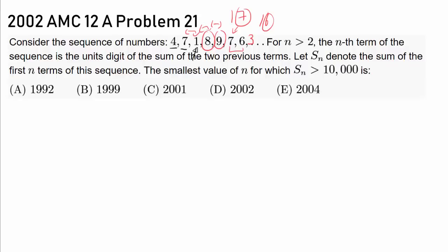So let's read on. Let S sub n denote the sum of the first n terms of the sequence. For example, S sub 3 is 4 plus 7 plus 1, or 12. And we want to find the smallest value of n for which S sub n is greater than 10,000. We want the sum of the first n terms of the sequence to be greater than 10,000, the smallest value of n for which S sub n jumps over 10,000.